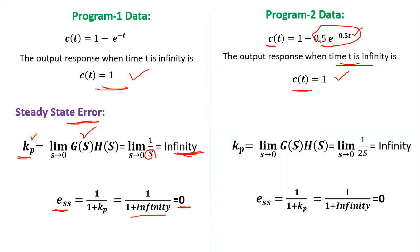For the second case G(s) = 1/2s and H(s) = 1, so Kp = lim(s→0) 1/2s = ∞. Steady state error = 1/(1 + ∞) = 0. So for both systems, output response is 1 and steady state error is zero. Now we write the MATLAB code and simulate both cases.